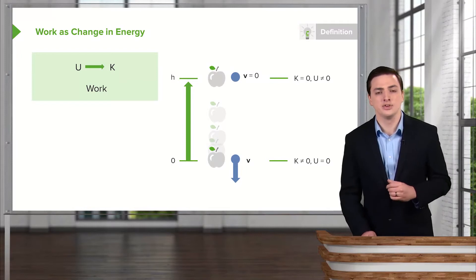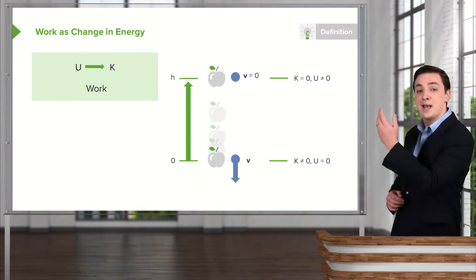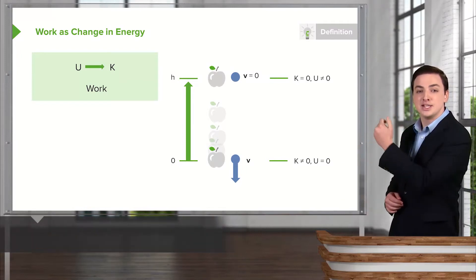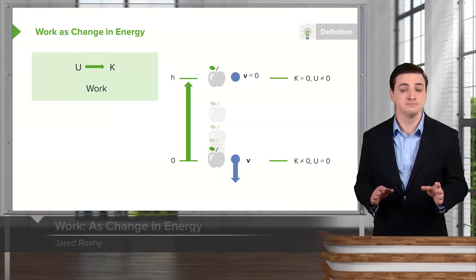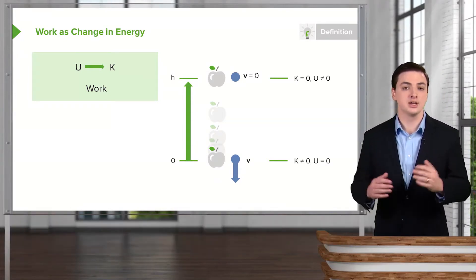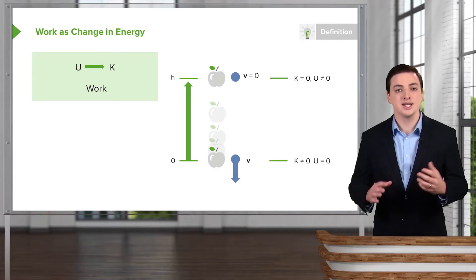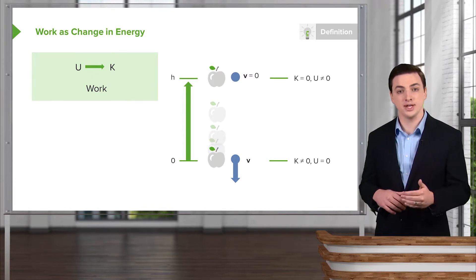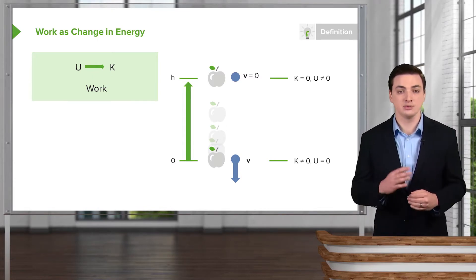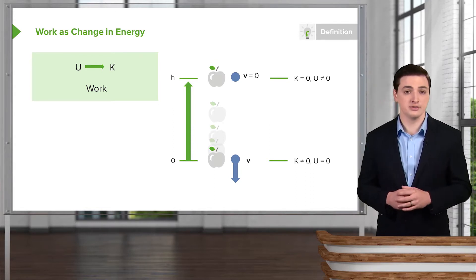Let's look at an example of an object that's falling. Suppose once again I have an apple at a particular height h — it has no kinetic energy, it's not moving. Then I let go and it falls, and now it picks up some kinetic energy. It had a kinetic energy that it did not have before, so we've somehow gone from a potential energy to a kinetic energy, as we saw when we were discussing energy and conservation of energy.